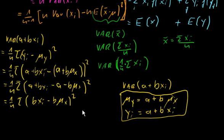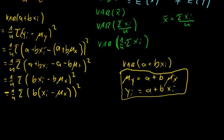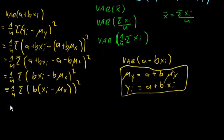And we can factor out the b. So it's 1 over n, sum b times x_i minus μ_x, the whole thing squared. And we see. Now if we square the terms, we can easily do it. 1 over n.